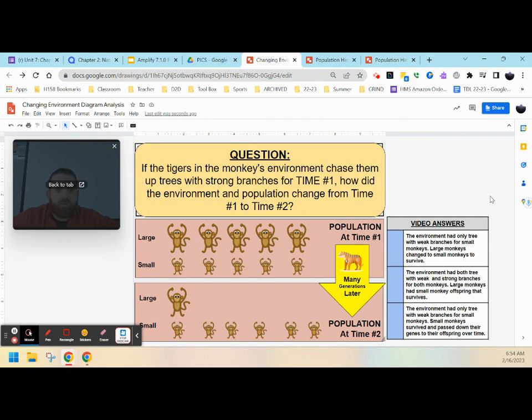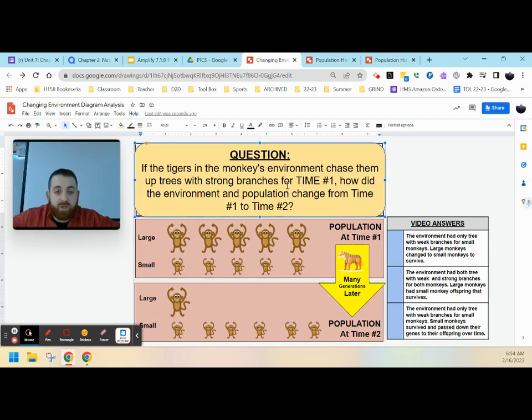Let's take a look. If the tigers in the monkey's environment chase them up trees with strong branches for time number one, how did the environment and population change from time one to time two? So we're looking over here at population at time one. We have a large group of monkeys that are large in size, and we have a large group of monkeys that are small in size. And we know that we have our tiger that chase them up trees with strong branches.